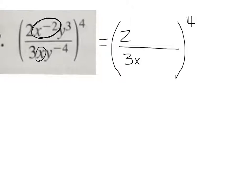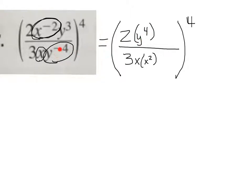I'm going to move this x to the negative 2 on bottom, so I'll have times x squared. And then I'm going to move this y to the negative 4 — to the top. So I've got y to the fourth on top. When I moved it from down here to up here, it made the exponent go from negative to positive. And then this y cubed is already on top, so I'm going to put y cubed right there. Now let's keep simplifying what's inside the parentheses.